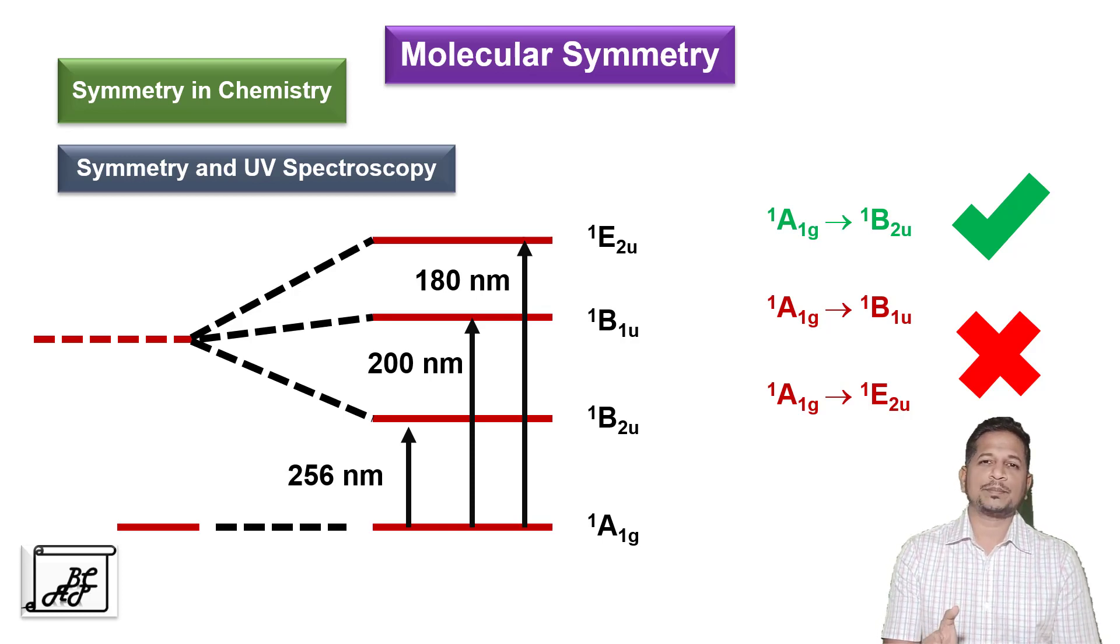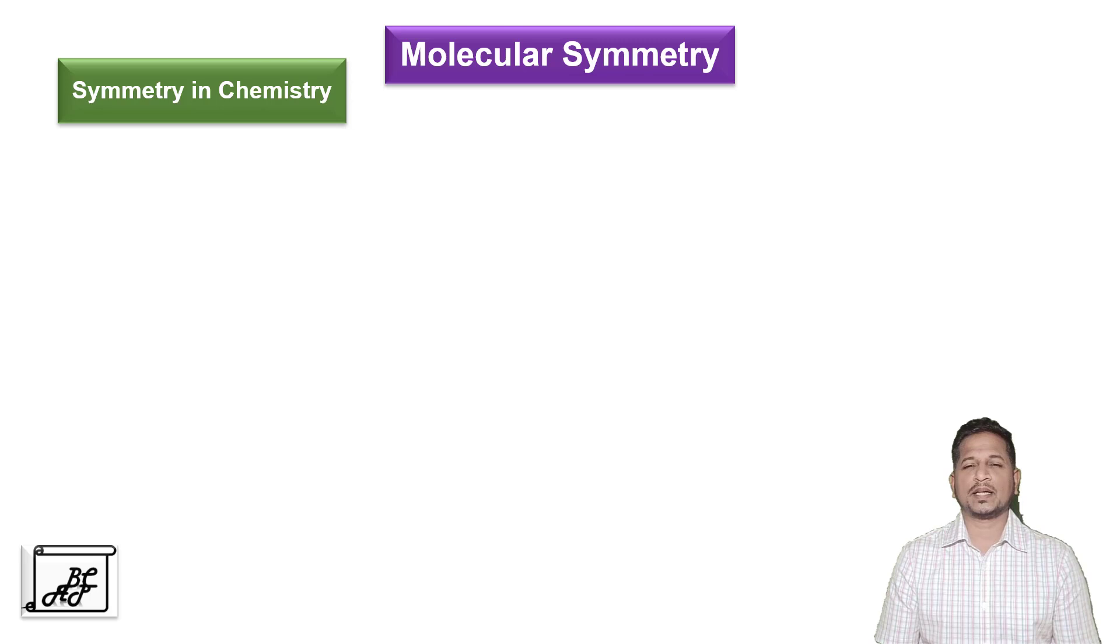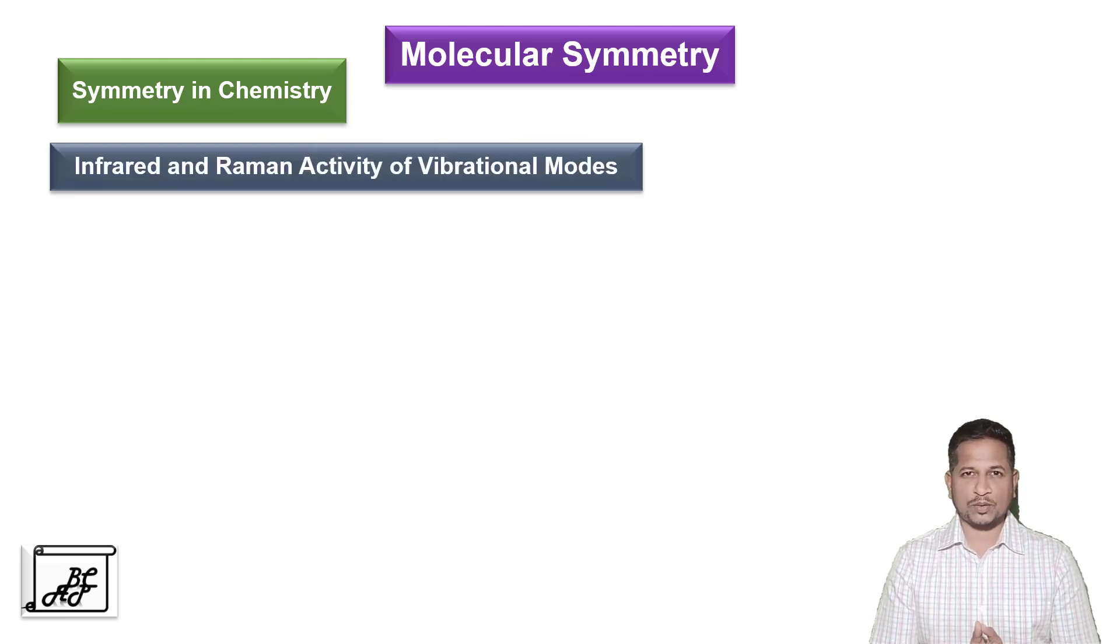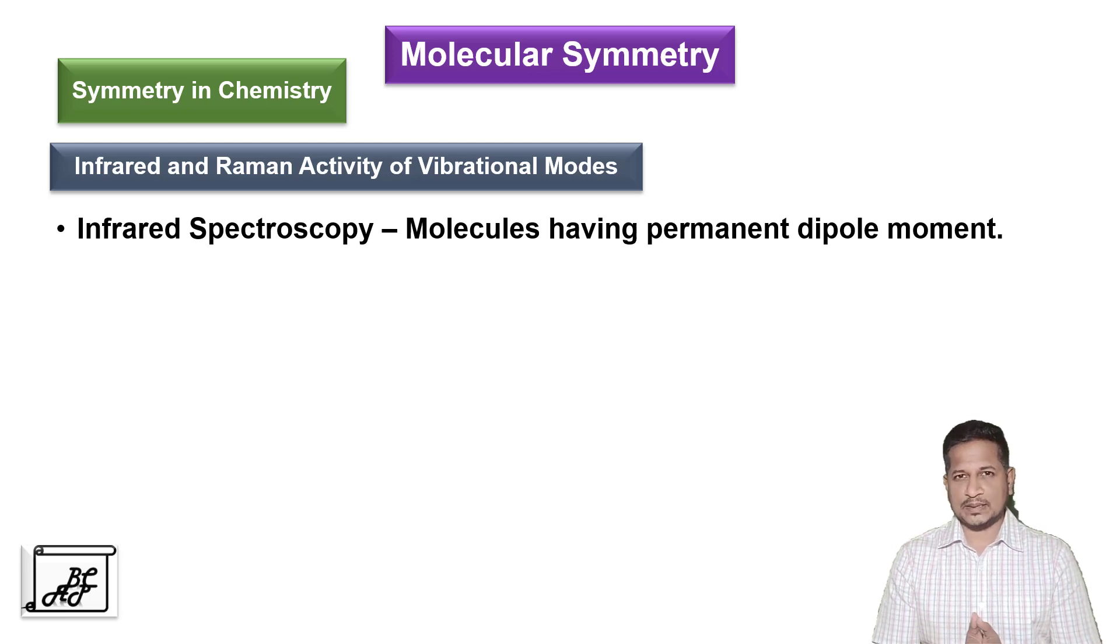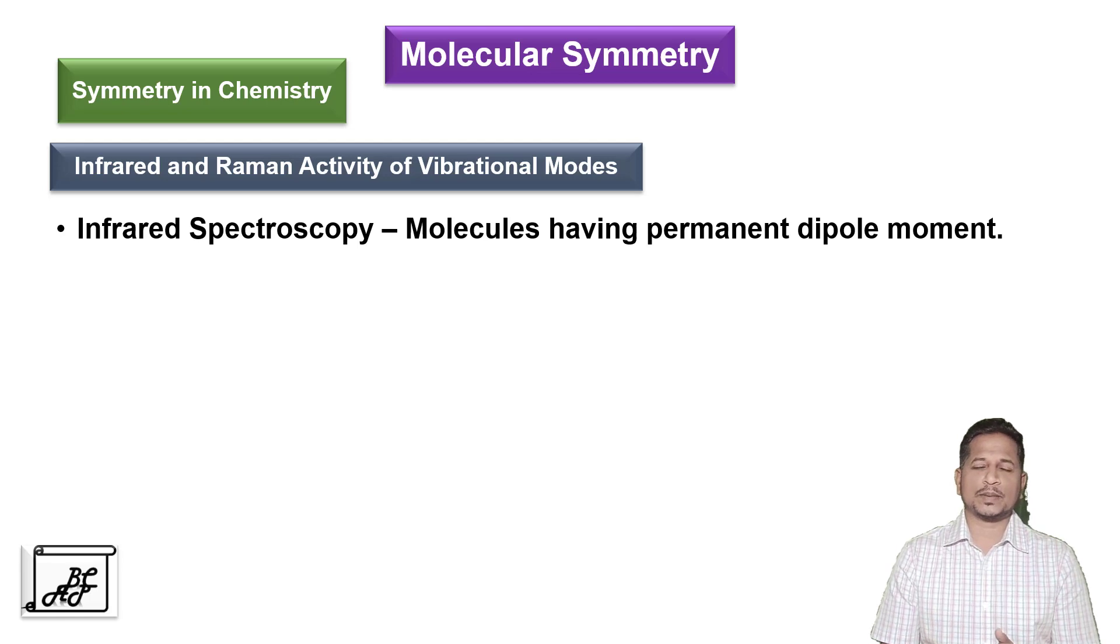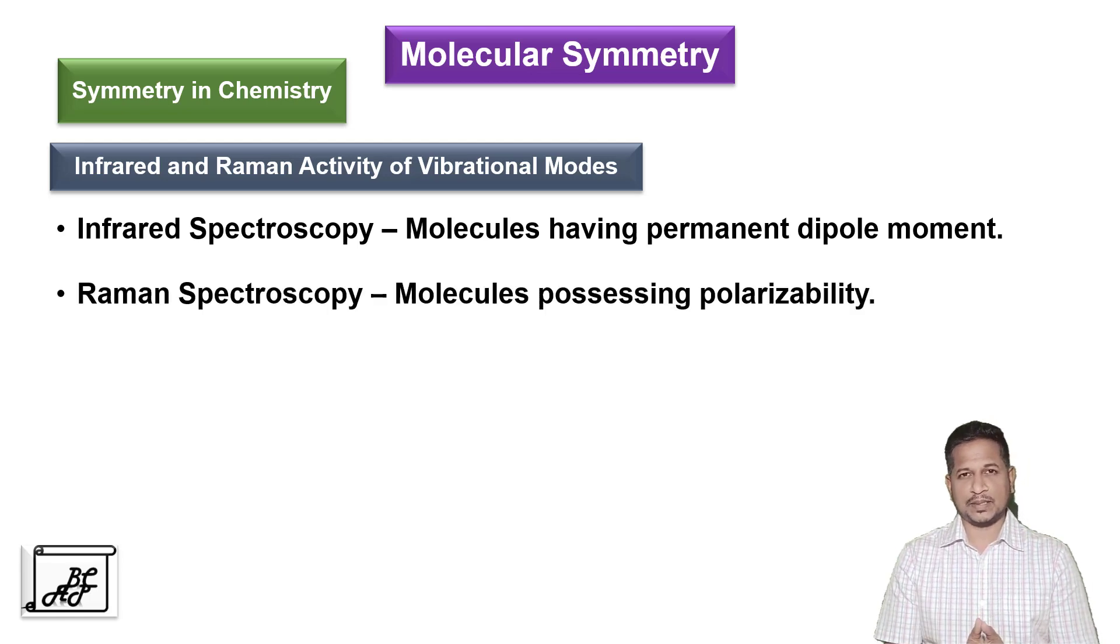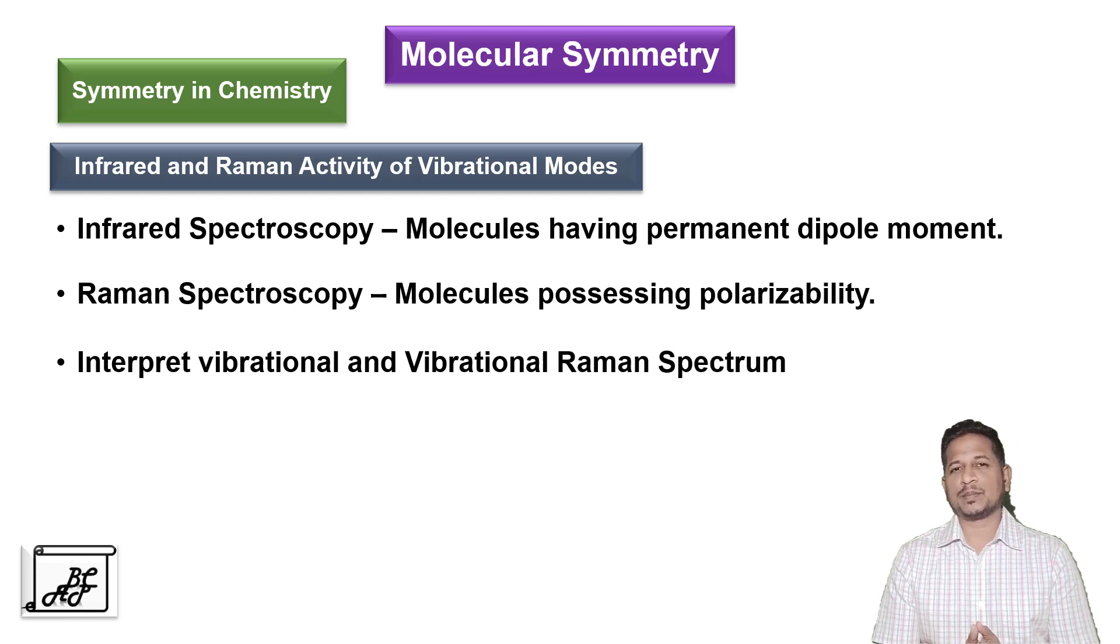And we can predict the UV spectrum of various molecules. Let us understand the next spectroscopic technique, IR and Raman spectroscopy. We know that if a molecule possesses a permanent change in the dipole moment, it is IR active. Whereas if a molecule possesses change in the polarizability, it is Raman active. With the help of molecular symmetry, we can predict whether the vibrations are IR active or Raman active.